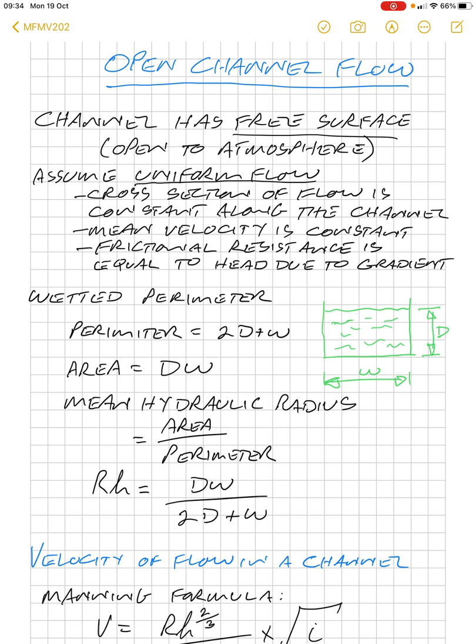As you can see in the green diagram, we have the width of the channel and we have the depth of the water. So we have three surfaces that are touching the water surface. So the perimeter would be two times the depth plus the width—that is the length of the perimeter. The area is the depth multiplied by the width.